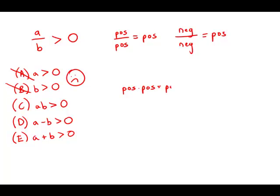And if we have a negative times a negative, that also equals a positive. And thus for both cases—a and b both positive or a and b both negative—their product would be positive. So it looks like C works.